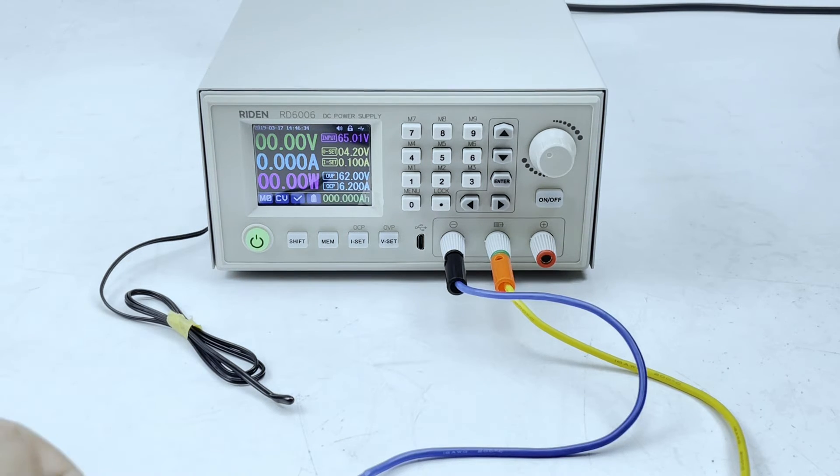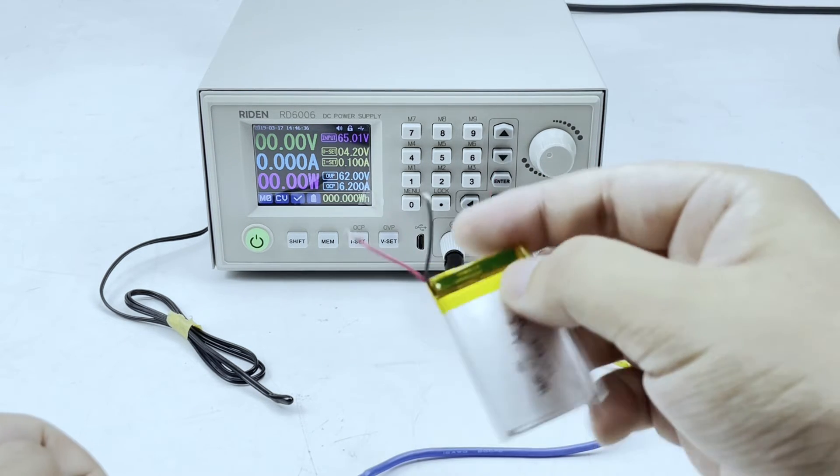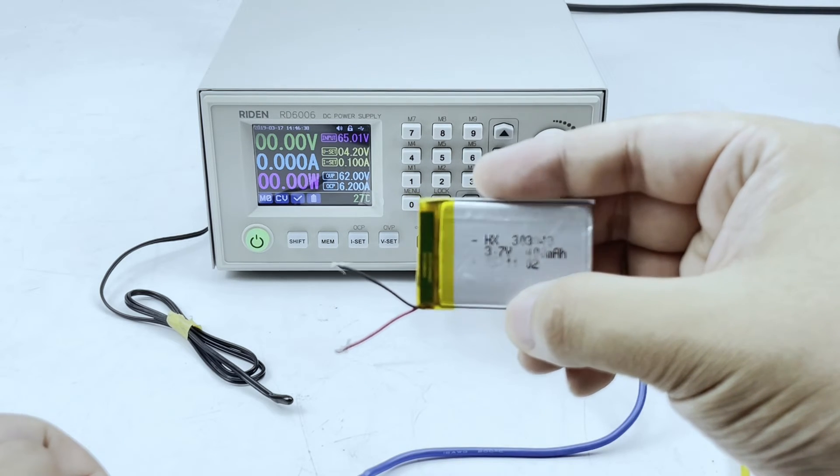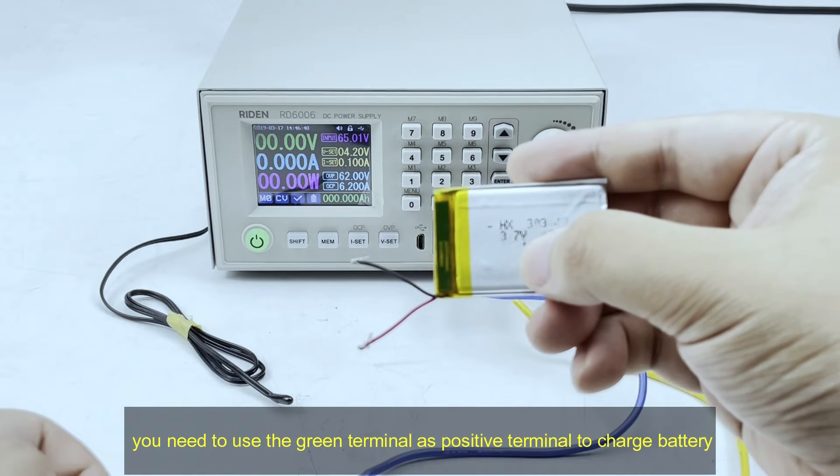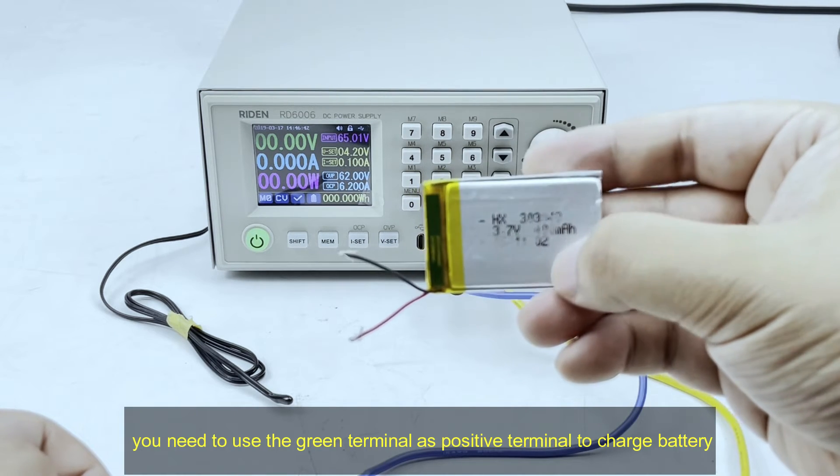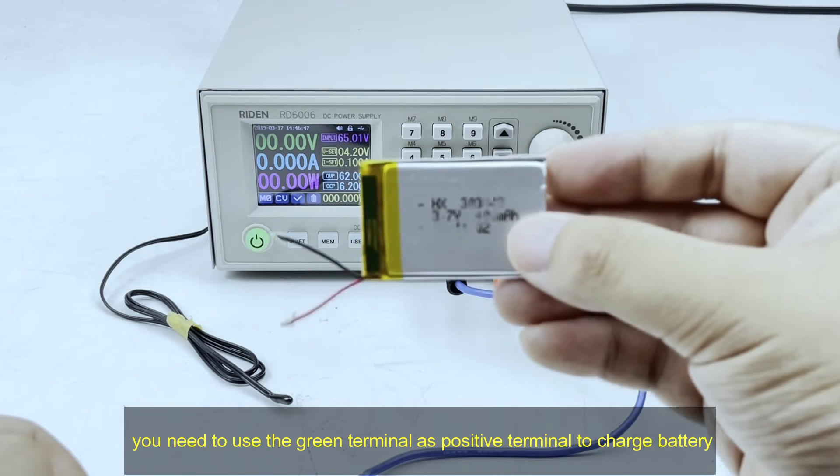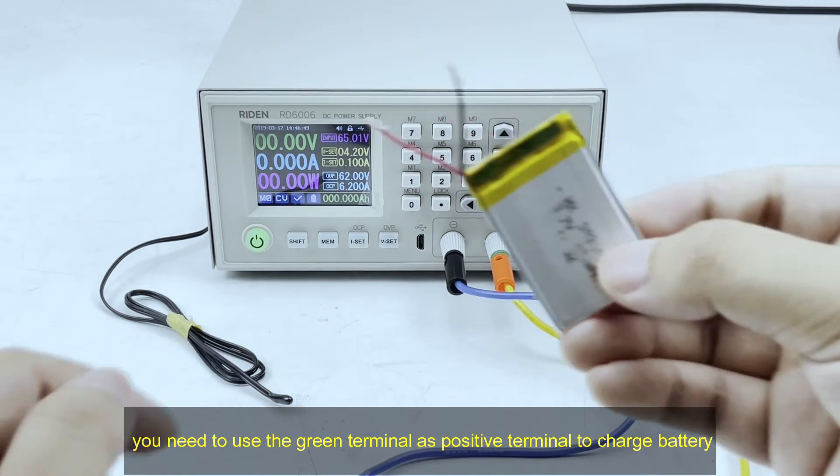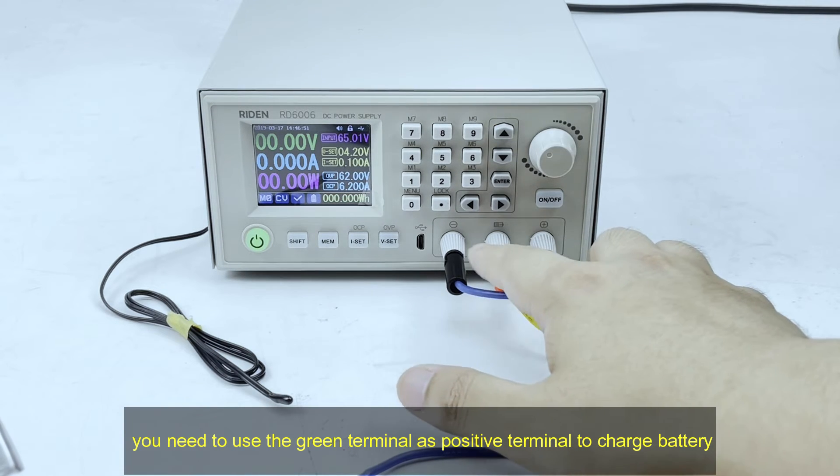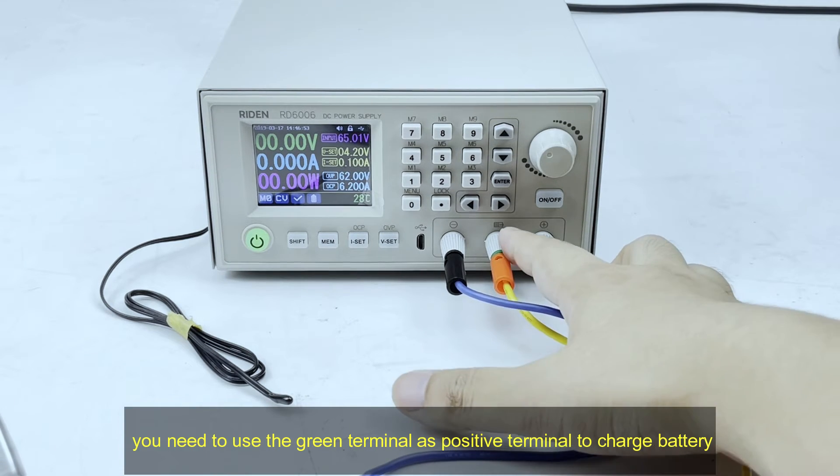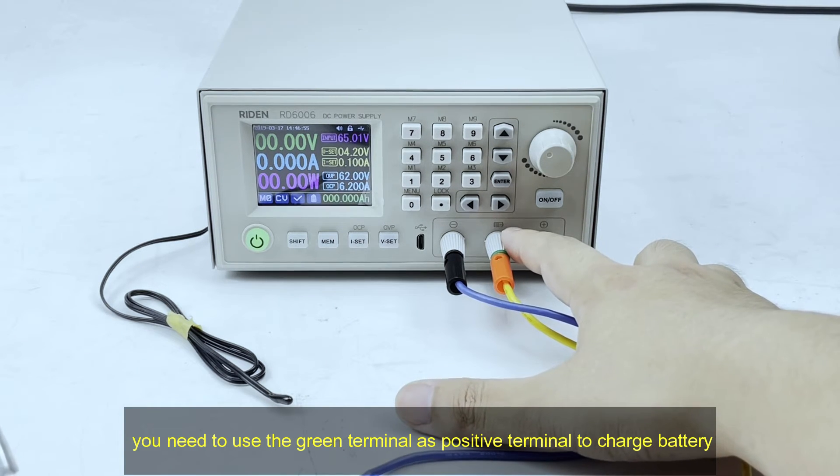For example, I have a lithium battery. You can see its data is lithium battery and its capacity. So I set 4.2 volts for this lithium battery and we need to use the green terminal as positive. You can see here it is for battery charging.